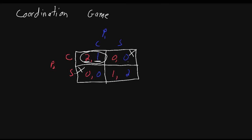How about when they're both going to the sporting event? Does player two have an incentive to deviate? Holding player one's strategy constant at sporting event, if player two changed his strategy from sporting event to concert, he would earn zero instead of one, which is not a good thing. So player two does not have an incentive to deviate — he prefers one over zero. How about player one? Holding player two's strategy constant at sporting event, if player one changed his action from sporting event to concert, he would earn zero instead of two, so player one does not have an incentive to deviate. Neither player has an incentive to deviate, so this is also a Nash equilibrium.